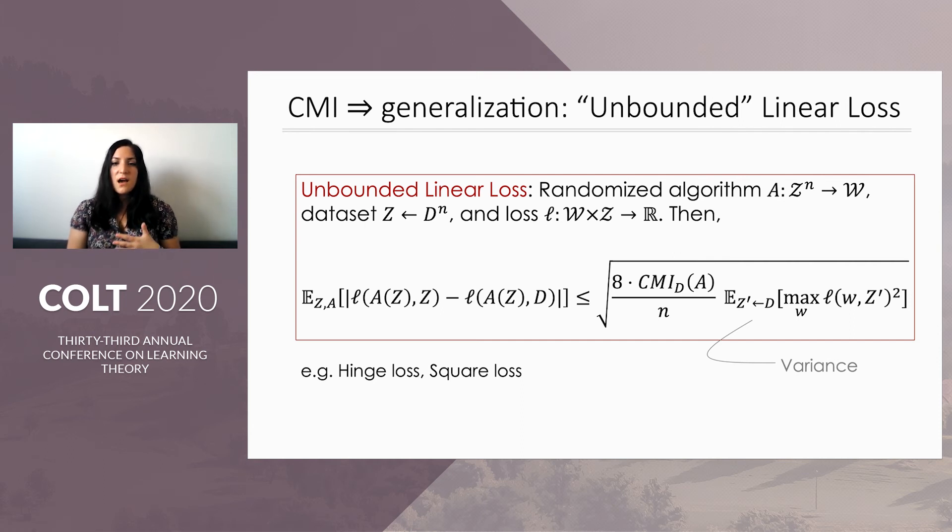We also extend our bounds to unbounded loss functions, and by that I mean they have unbounded range, but we do require some bound on a higher value. So this bound includes these variant terms in the square root. So common loss functions that fall into this category are the hinge loss or the square loss, basically the mean squared error.